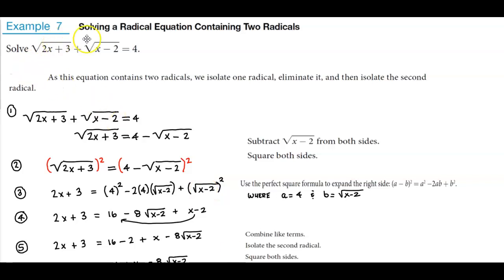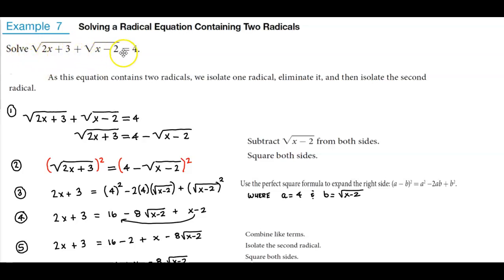In example 7, we're solving a radical equation containing two radicals. We're going to solve the square root of 2x plus 3 plus the square root of x minus 2 equals 4.